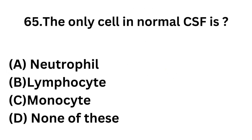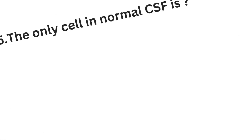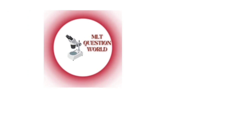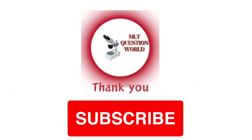Question number 65: The only cell seen in normal CSF — Option A: Neutrophil. Option B: Lymphocyte. Option C: Monocyte. Option D: None of these. CSF is present in subarachnoid spaces of the brain and spinal cord, and the only cell present in normal CSF is lymphocyte. Today we are winding up. You can watch the previous videos from the playlist; links are in the description box.